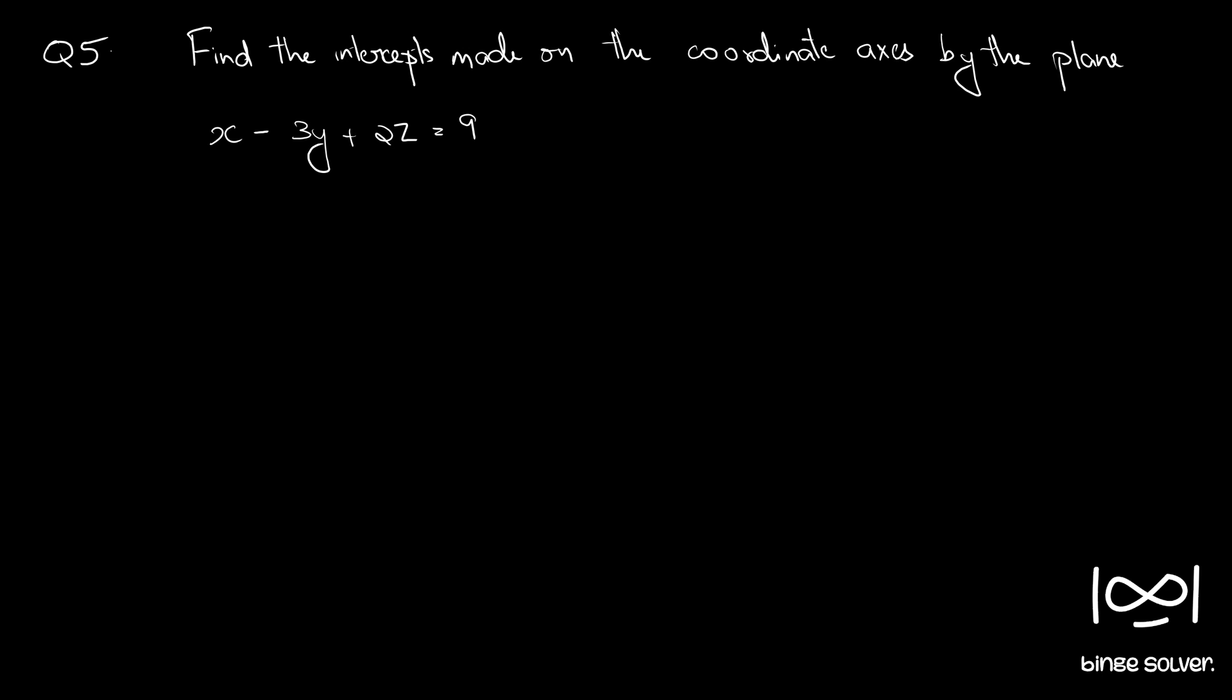Question number 5. Find the intercepts made on the coordinate axis by the plane x minus 3y plus 2z equal to 9.